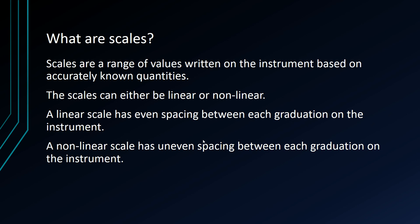It can either be a linear scale or a non-linear scale. And linear should have you think about the word line or straight line. And I'll show you what I mean by straight line later on. A linear scale is evenly spaced between the graduations on the instrument. So it has even spacings. And another name for a linear scale is called a uniform scale.